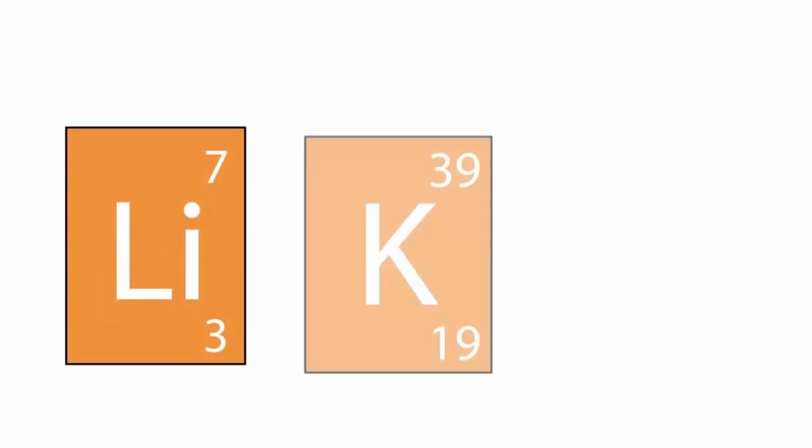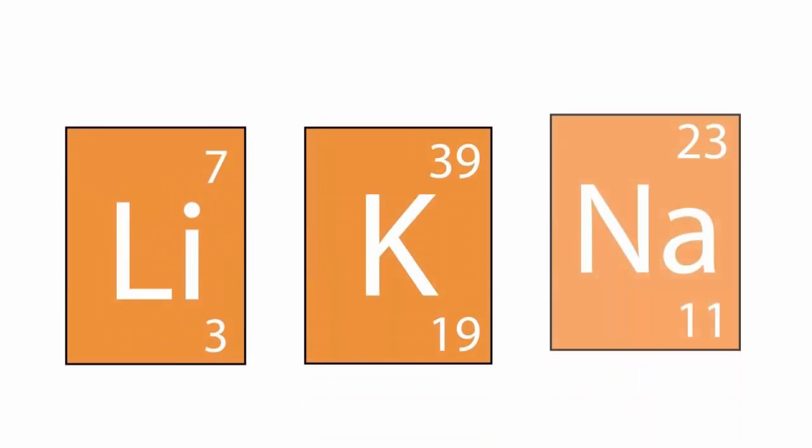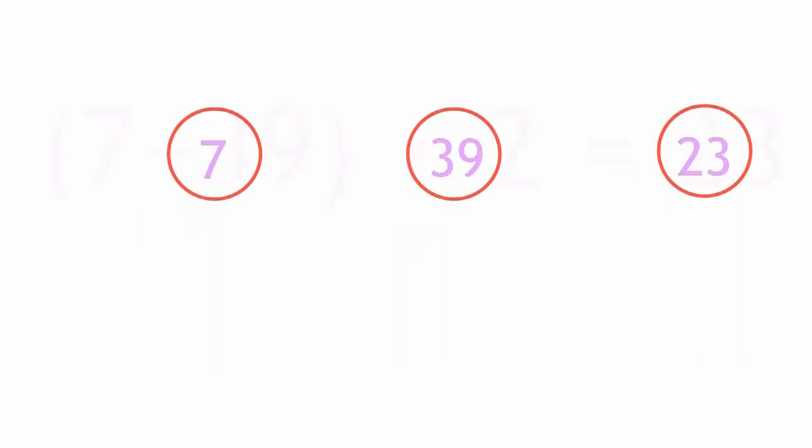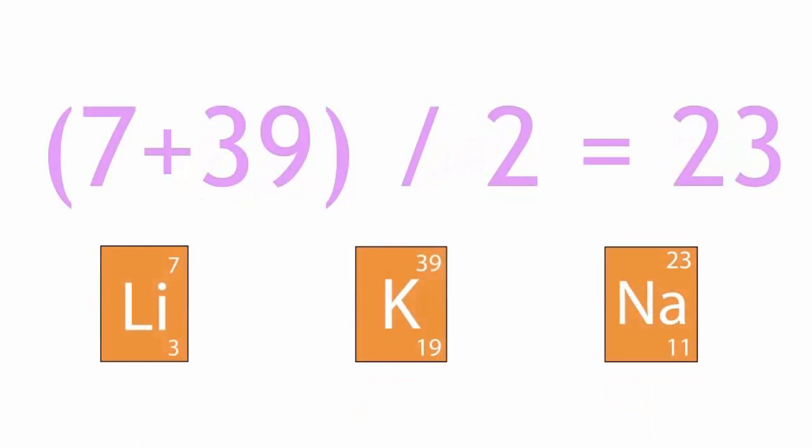An example of one of these triads was lithium, sodium, and potassium. The interesting characteristic of triads was that when they were placed in order of their atomic mass, the middle element always had an atomic mass which was an average, or very close to an average, of the other two elements in the triad.